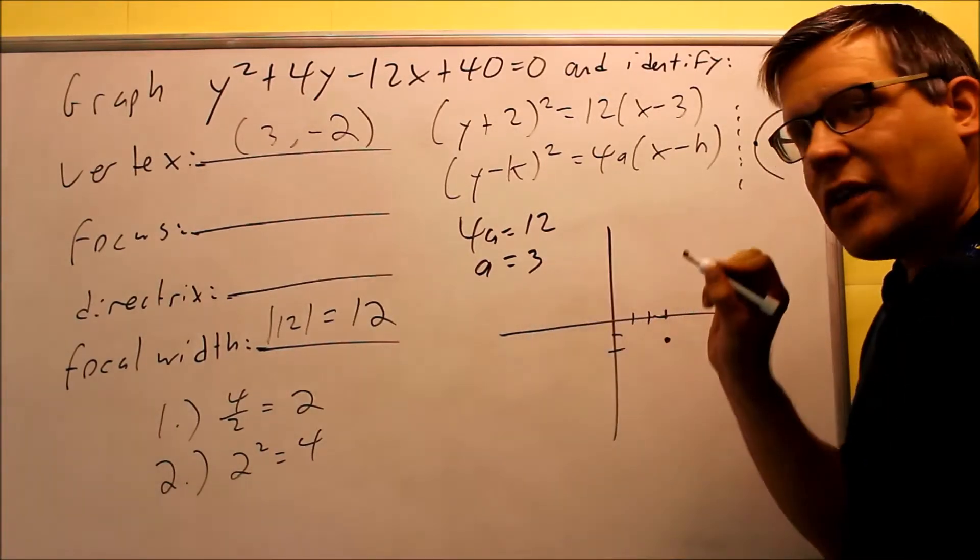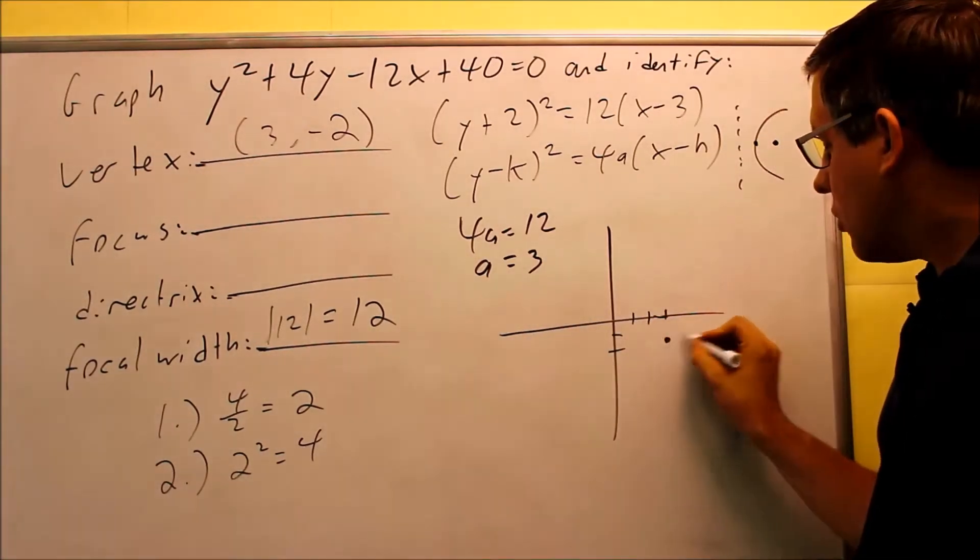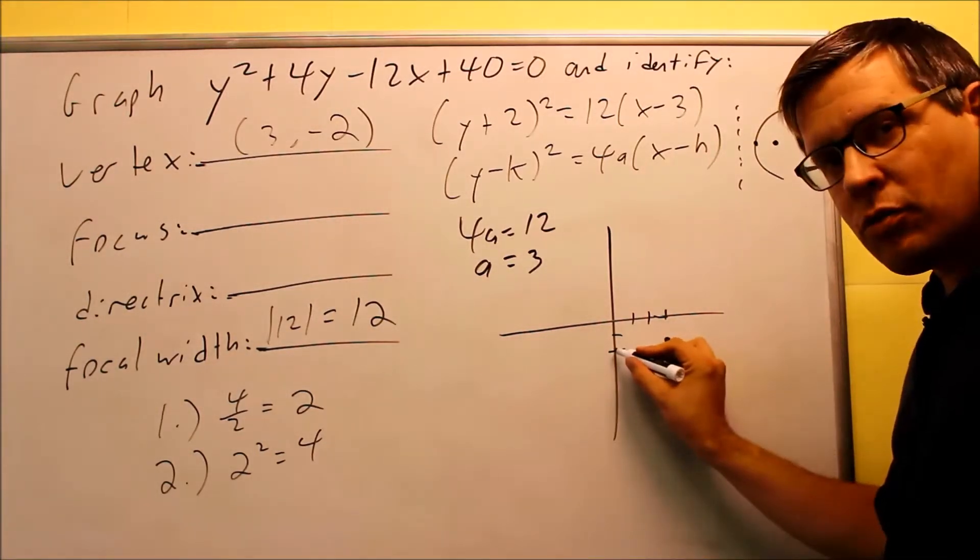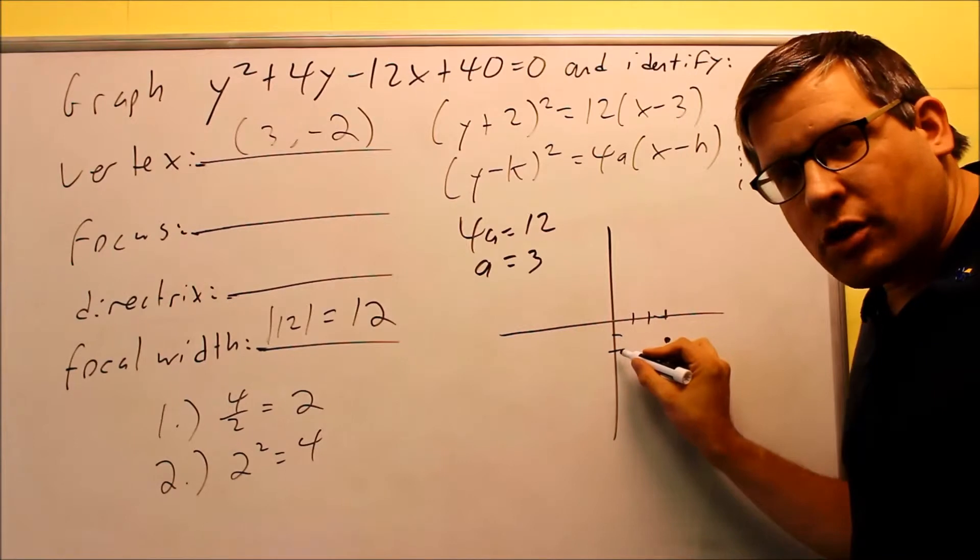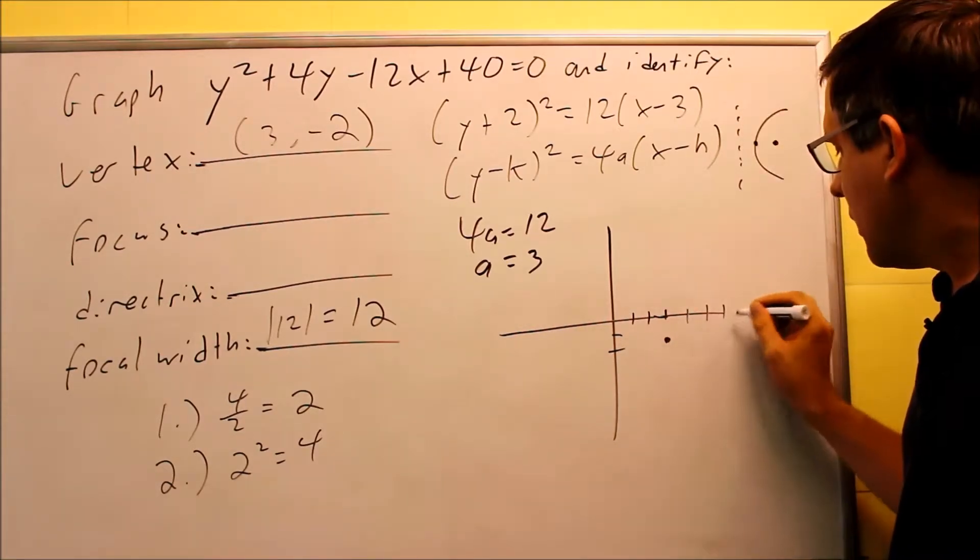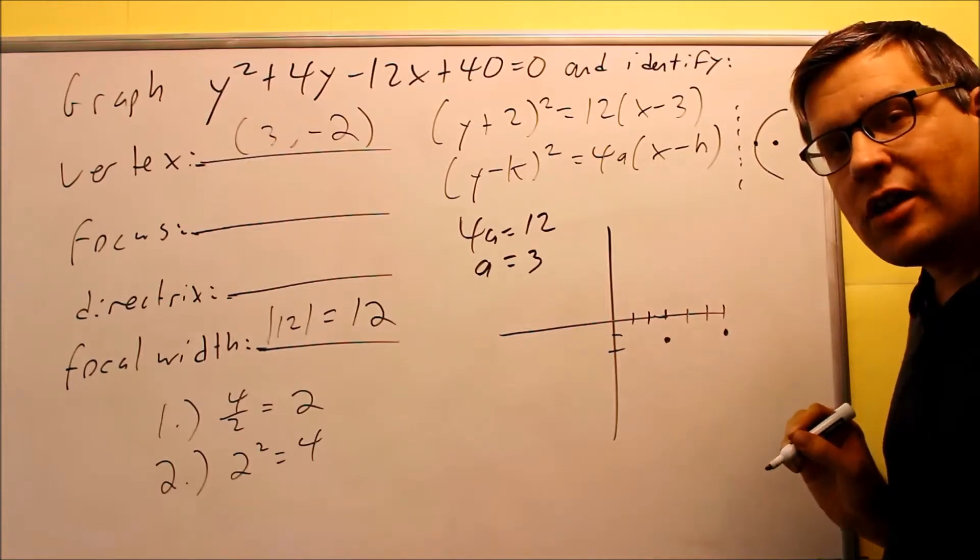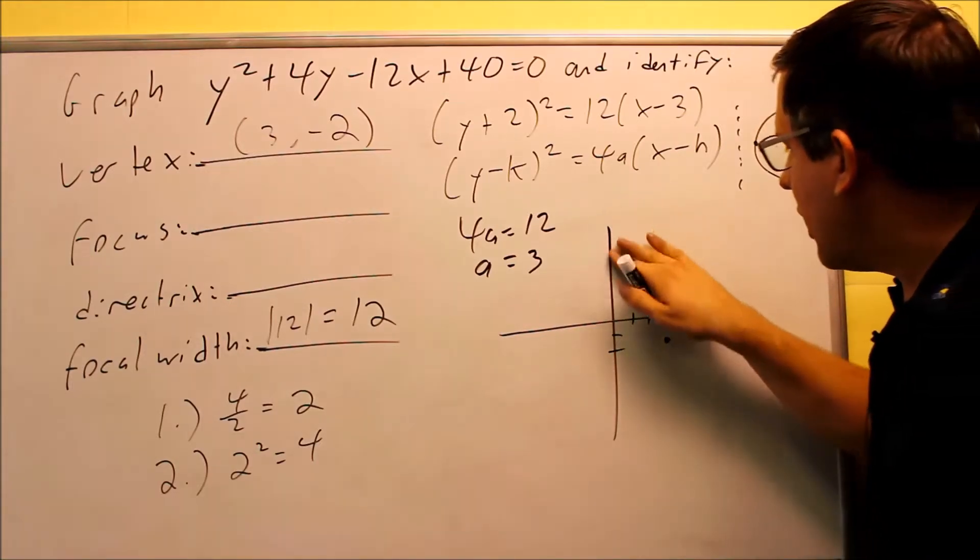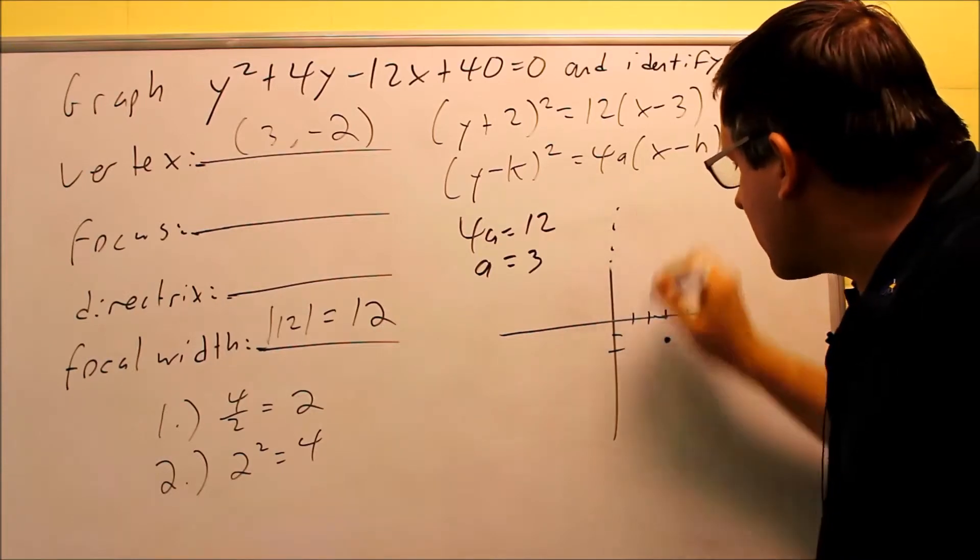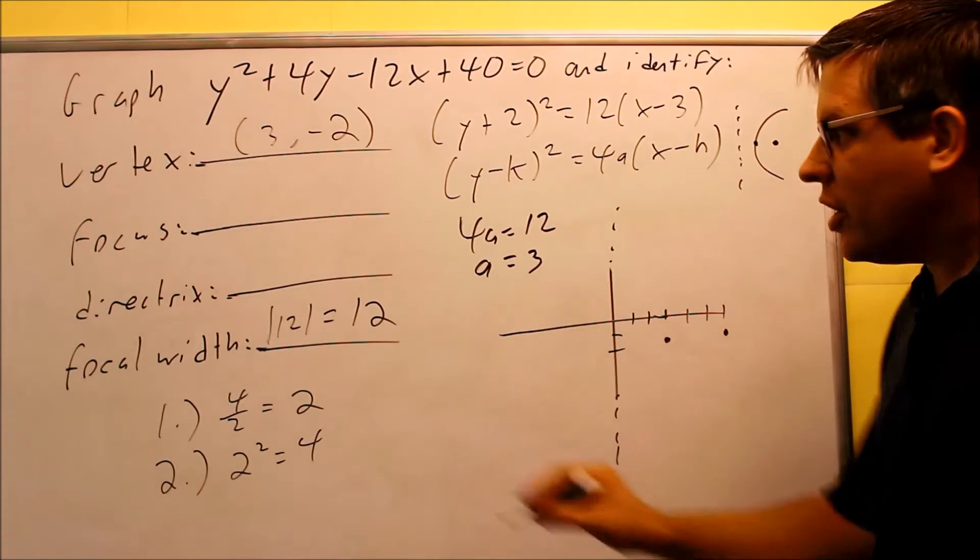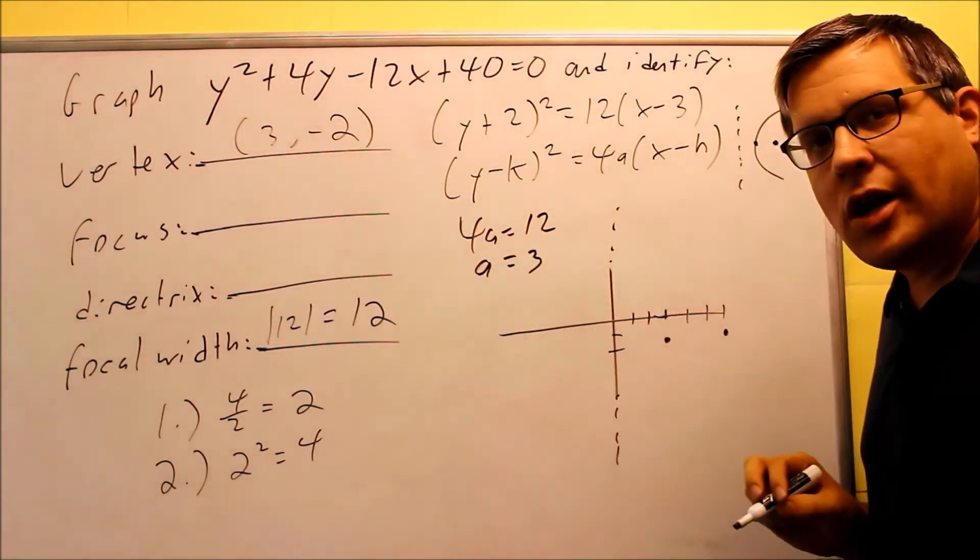Now what this says to do is my a value is 3. So I need to go to the right 3 to get my focus, left 3 to get my directrix. So from here I'm going to go 3 places to the right, make a dot there. That's my focus. Now if I go 3 places to the left, then it ends up that my y-axis is actually my directrix. So now that I have both of those complete, I can go ahead and indicate those on the blanks here.